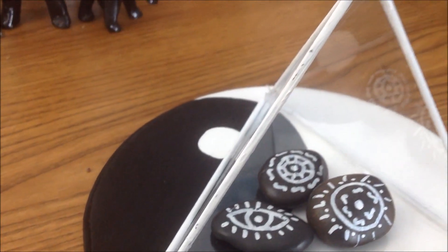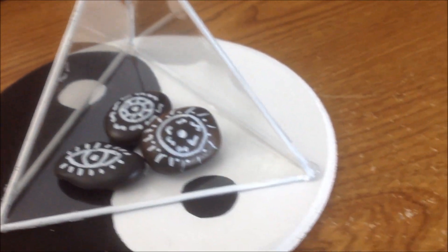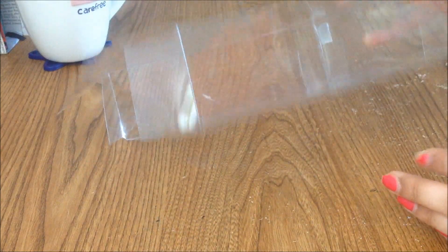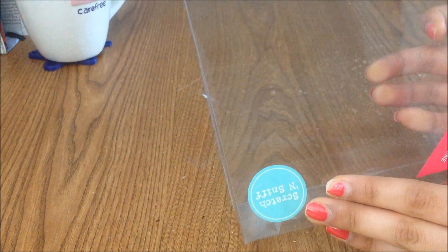For our next DIY, we're gonna make this see-through prism which I know you guys must have seen on Tumblr, Anthropologie and Urban Outfitters. For this DIY, you're gonna need some strong plastic which I simply got from a plastic box.